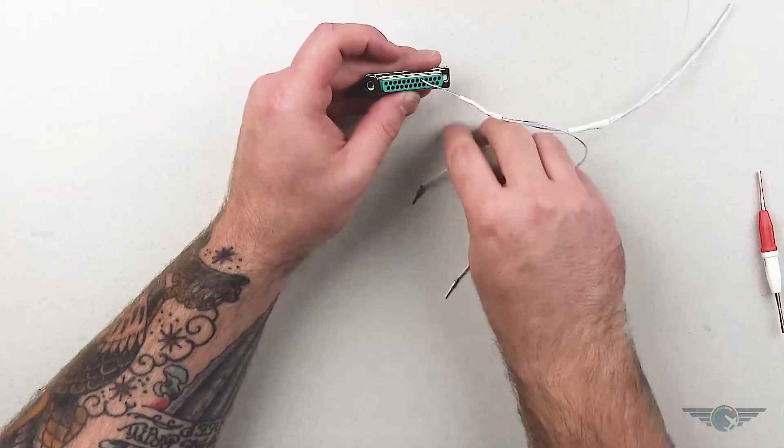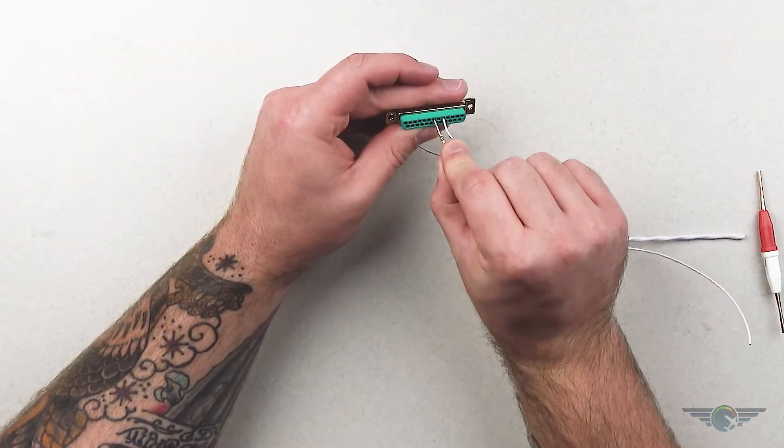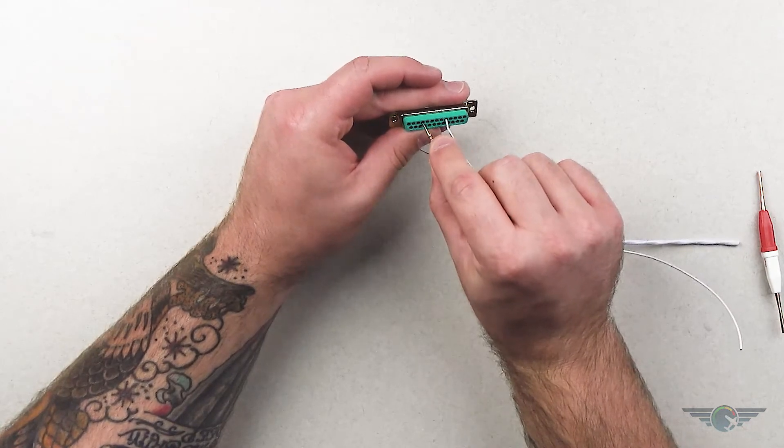Our CAN bus low, which is this guy, is on pin 10. So I've got six, seven, eight, nine, and ten.